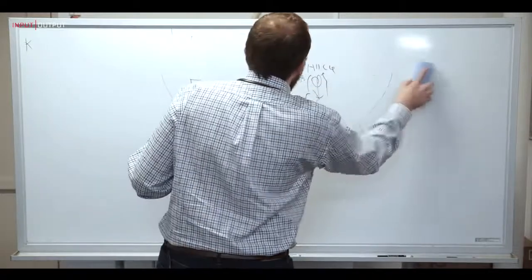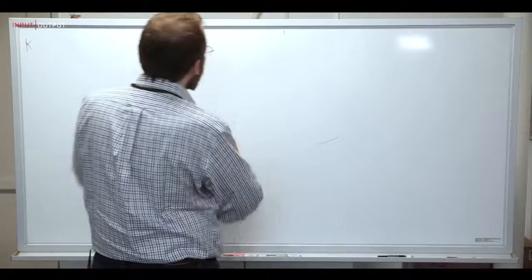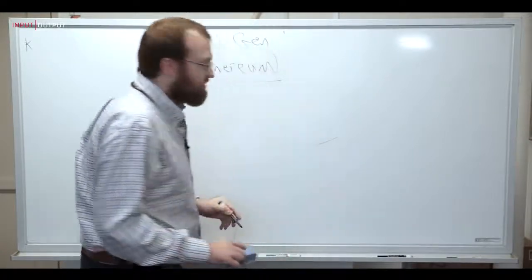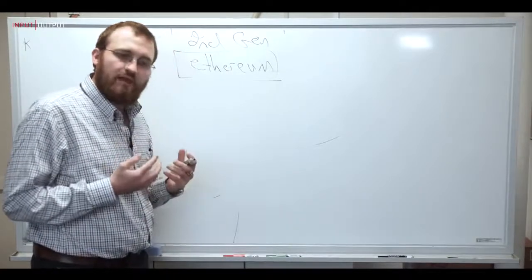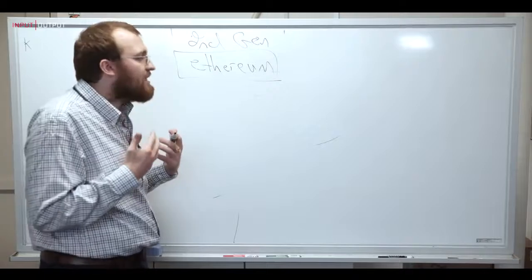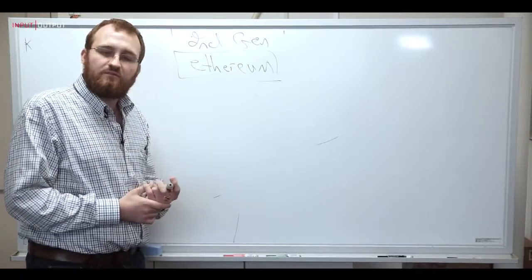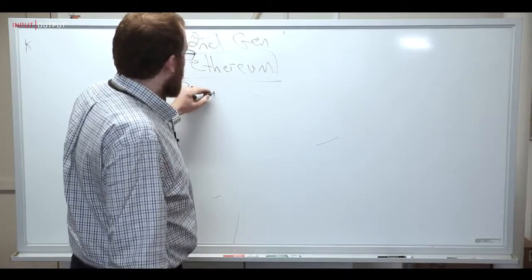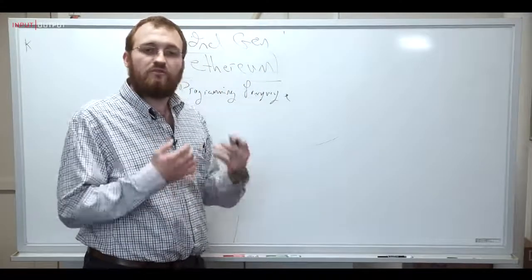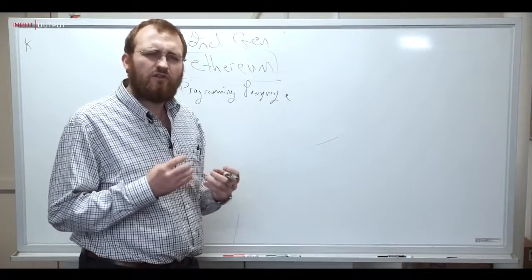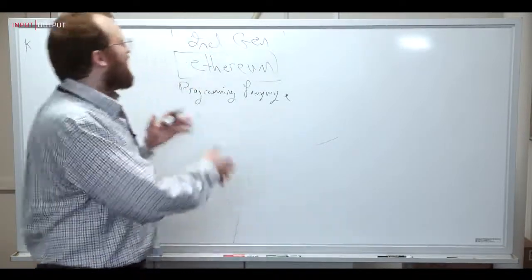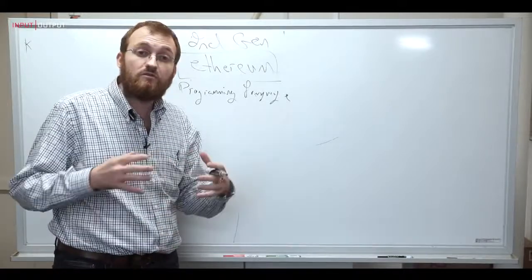So back in 2014, Vitalik Buterin, myself and many others came together and we launched the first second generation blockchain. And this is Ethereum. Now Ethereum is kind of like when JavaScript came to the web browser. We went from these static simple pages to pages that were fully programmable that enabled us to build the Facebooks, the Googles, the Gmails. So Ethereum brought a programming language to a blockchain. So when Alice sends that value to Bob, all those terms and conditions could then be embedded within the transaction.